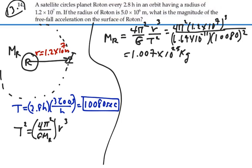Alright, so that's the mass of planet Roton and we know its radius so now we've got a situation where we have planet Roton we know its mass we know the radius because the radius of Roton is given as 5 times 10 to the 6 meters